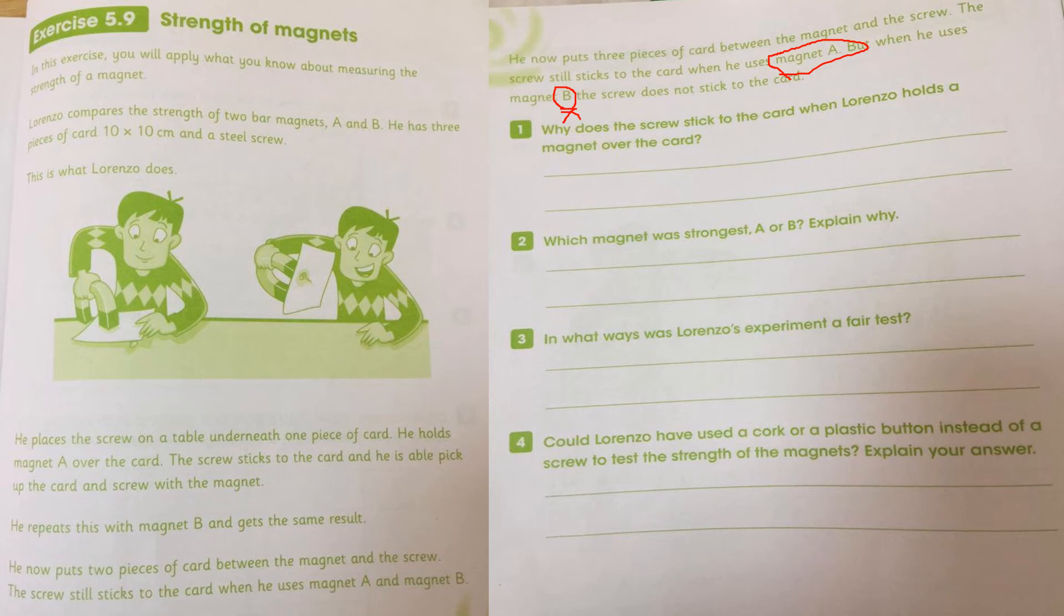Right now, the question is, why does the screw stick to the card when Lorenzo holds a magnet over the card? Because, what is because? Because it's a magnetic material. Screw is a magnetic material. And only the magnetic material attract by the magnet. So you write here, it's a magnetic material.